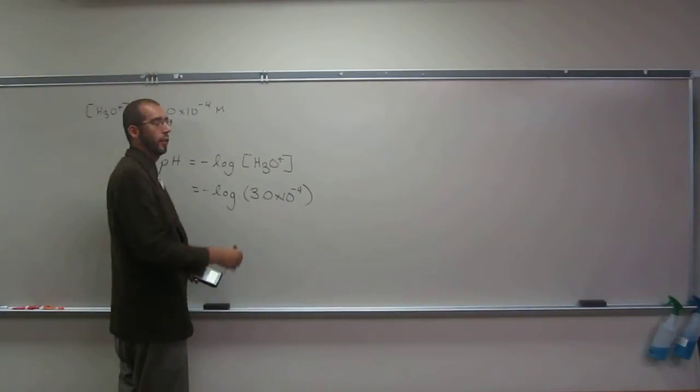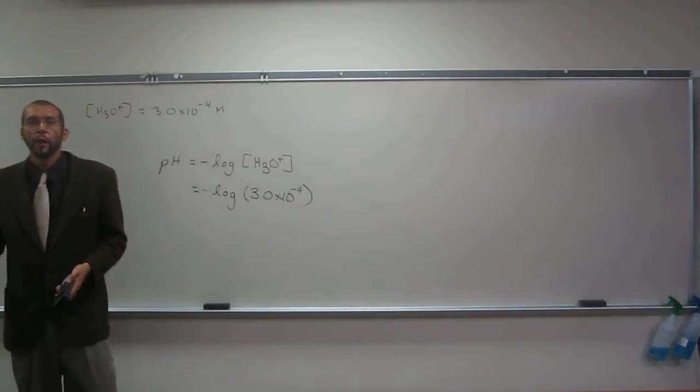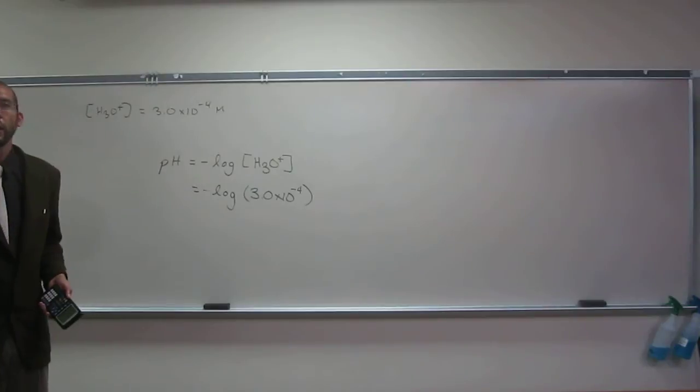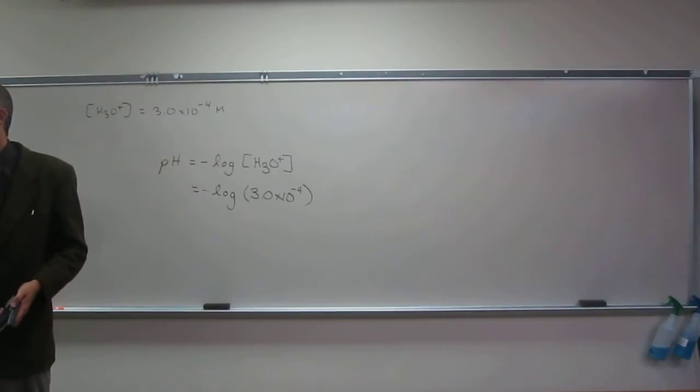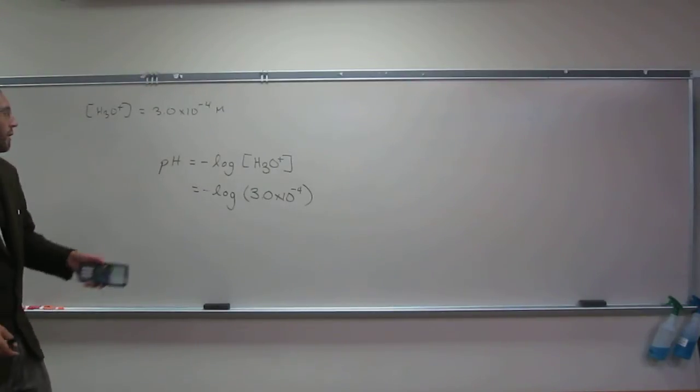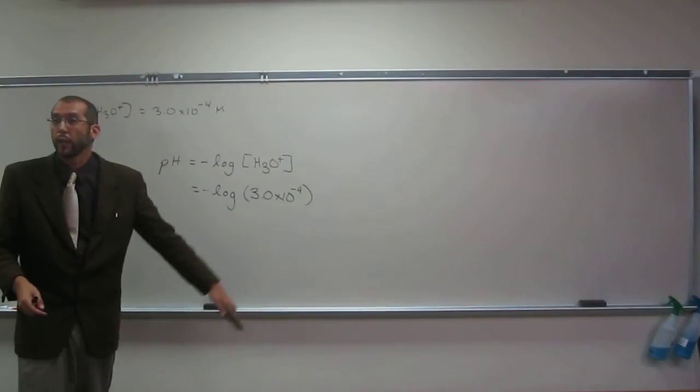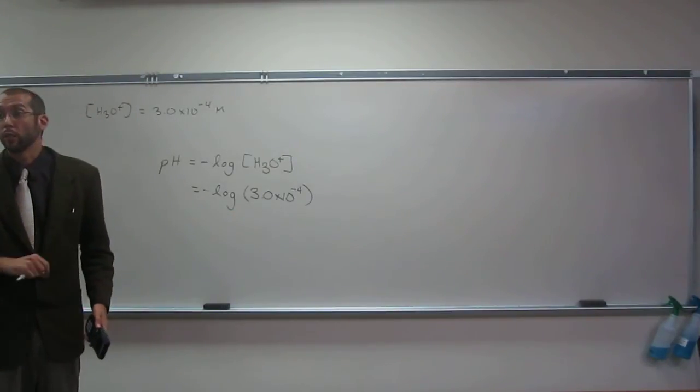So here there's a weird rule: whenever you take the log, you increase the number of significant figures, so this is going from 2 to 3. And when you go the other way, you go from 3 to 2.